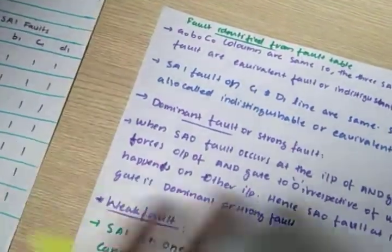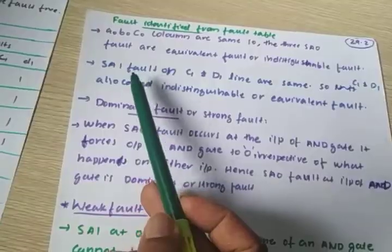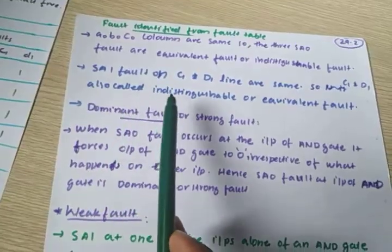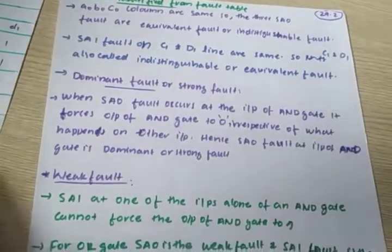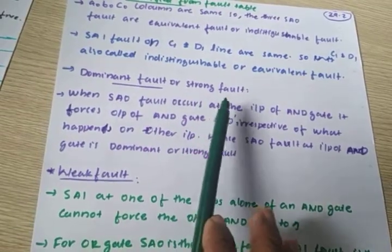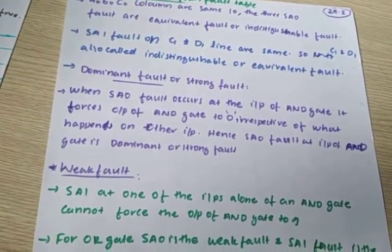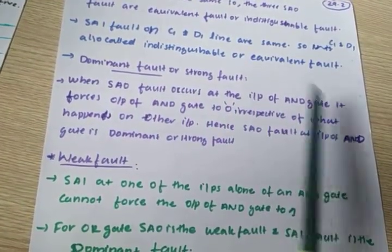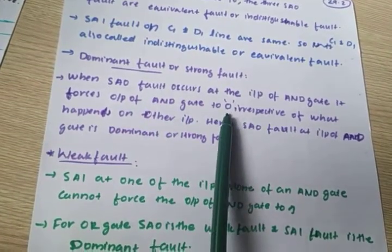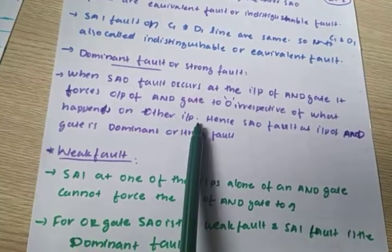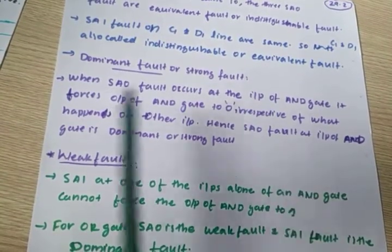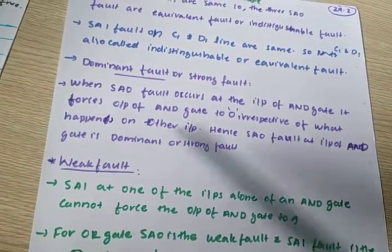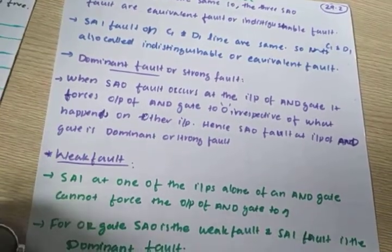So the faults on c1 and d1 lines are the same, so c1 and d1 are also called indistinguishable or equivalent faults. Next is dominant fault or strong fault. When a stuck-at-0 fault occurs at the input of an AND gate, it forces the output of the AND gate to 0 irrespective of what happens on the other input. Hence stuck-at-0 fault at the input of an AND gate is called dominant or strong fault.